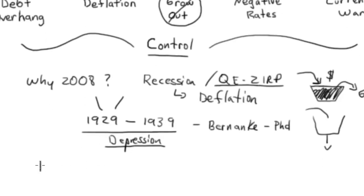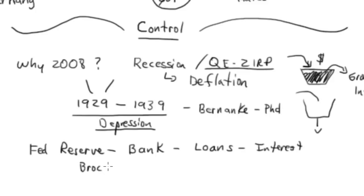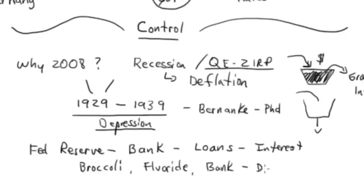The Federal Reserve — ultimately, what is it? It is a bank. And how does a bank make money? They make money through loans and collecting interest. If I'm a broccoli farmer, I want to convince you that broccoli is good for you. If I'm a manufacturer of fluoride, I want to make sure the government is convincing everybody we need fluoride in our water. And if I'm a bank, I want to convince you that debt is a good thing. And if you're the Federal Reserve, this isn't something you can just convince somebody of — this is something you can mandate.